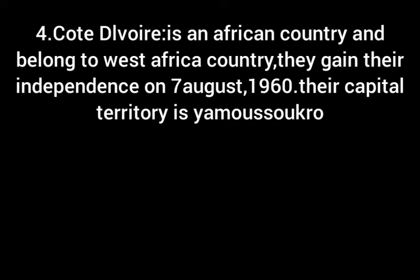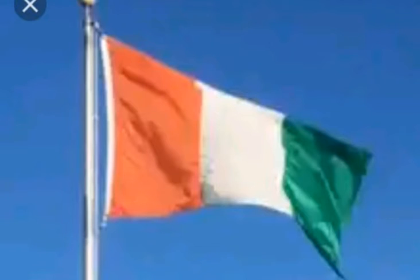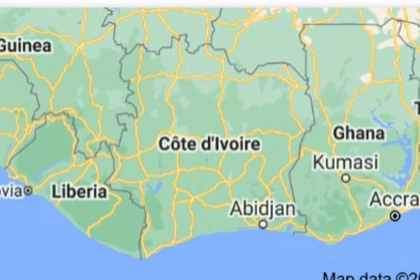Number 4, Cote d'Ivoire. Cote d'Ivoire is an African country and belonged to West Africa. They gained their independence on 7 August 1960. Their president's name is Alassane Ouattara. This is the currency of the country. Their capital territory is Yamoussoukro. This is the Cote d'Ivoire flag and map.